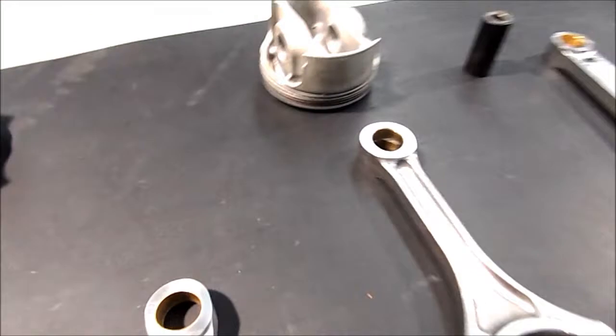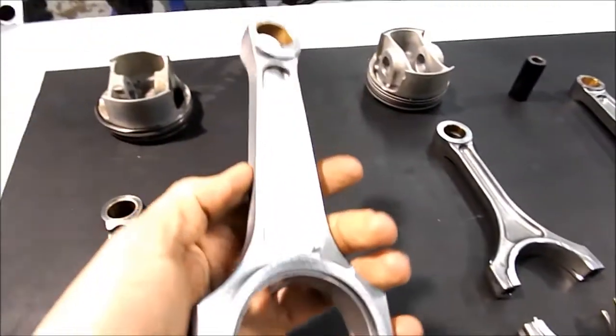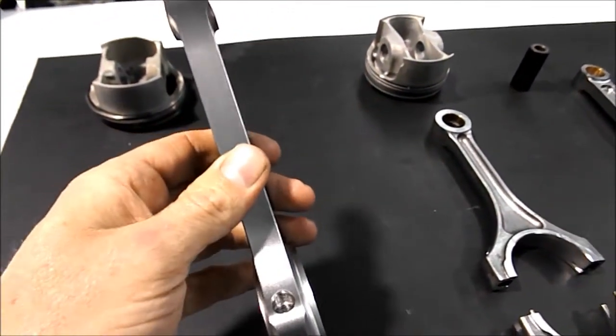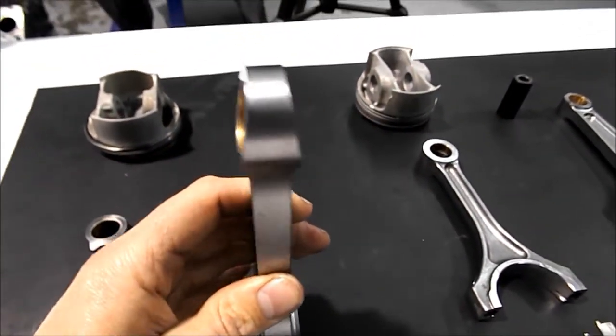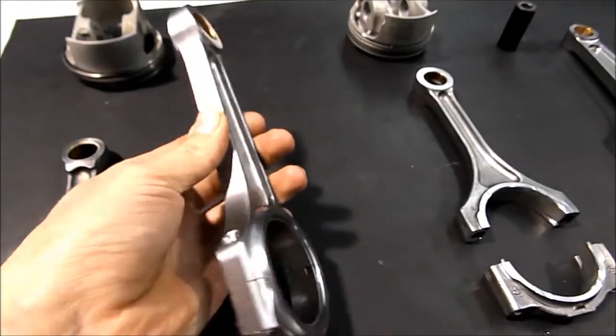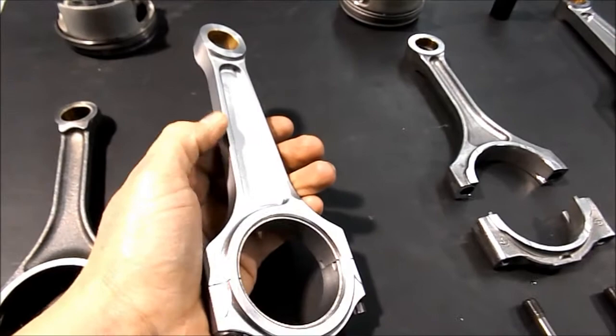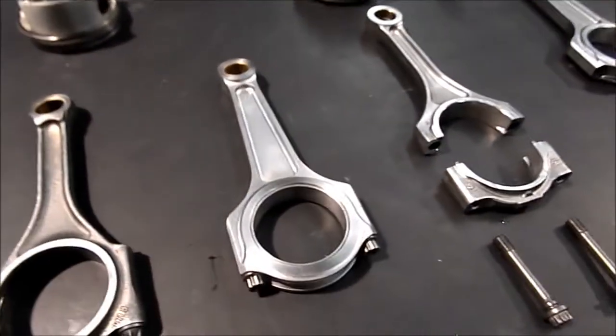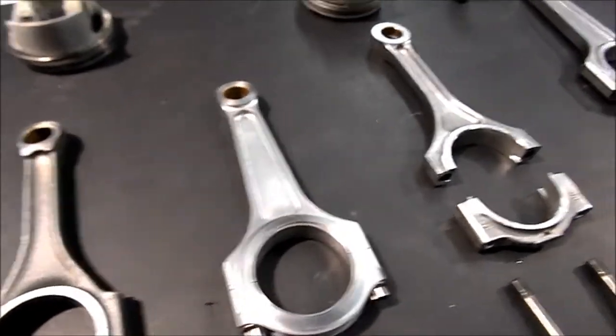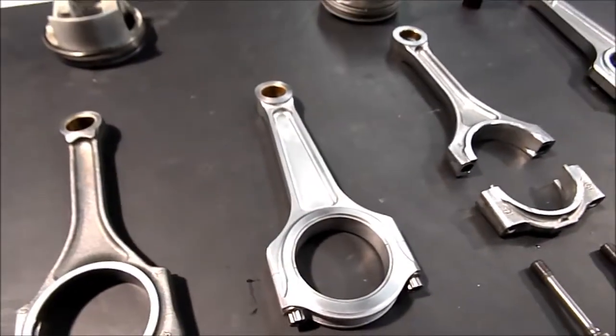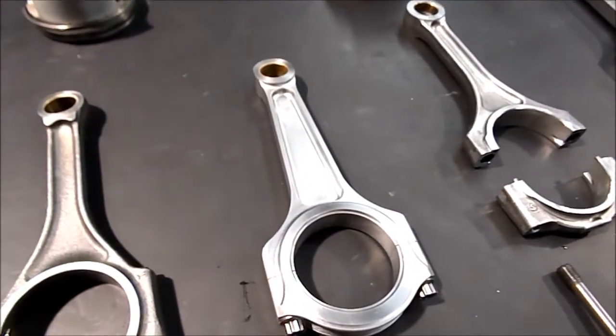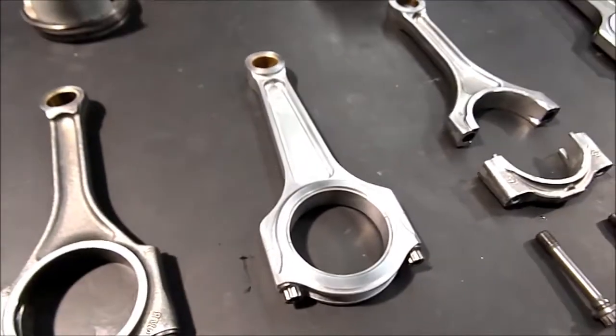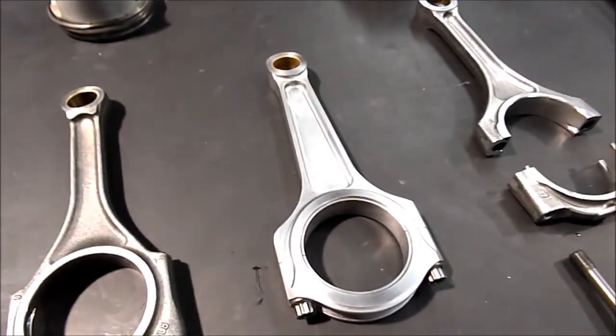This is the forged billet rods that we have made by Argo. One of the requirements when we had these rods made was that it needed to fit the OEM piston, which was an important feature of the rod. It means that anyone could buy these rods and could fit them to a 5.0L Gallardo without the requirement of replacing the pistons.